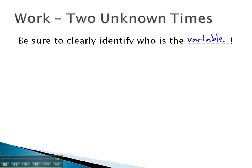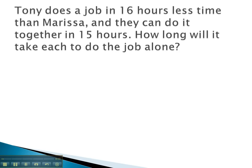Let's take a look at some examples where we can see this work out. In this problem, we see we've got Tony, who does a job in 16 hours less than Marissa. We don't know anything about Marissa, so let's call her x. Tony will be 16 hours less, or x minus 16.